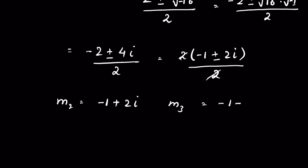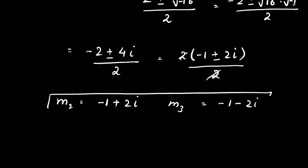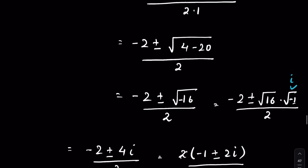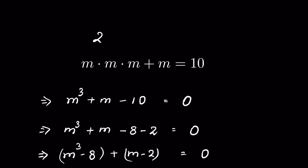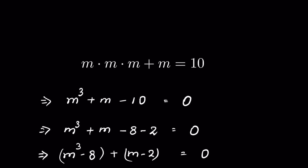Let's verify the real solution m equals 2: 2³ plus 2 should equal 10. 2³ is 8, plus 2 equals 10. Therefore m equals 2 is the real solution. How did you solve it? Let me know in the comment section. Thanks for watching.